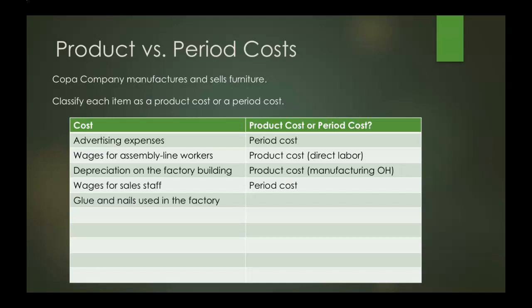The next one is glue and nails used in the factory. This will be used in the manufacturing process, so this is a product cost and it falls under manufacturing overhead.